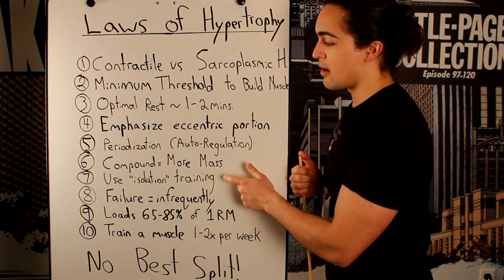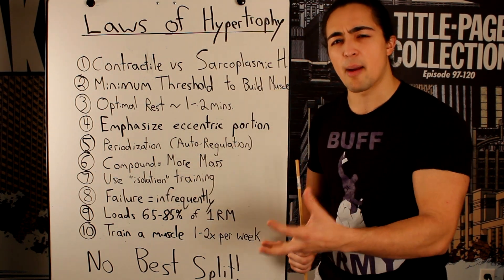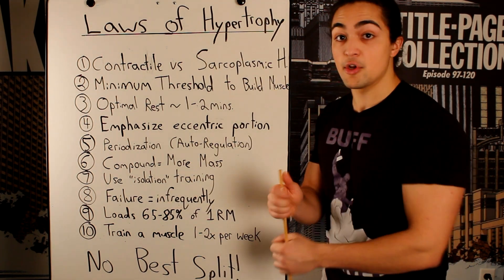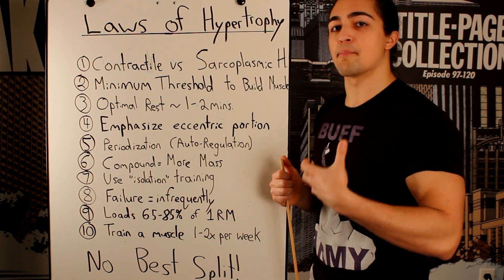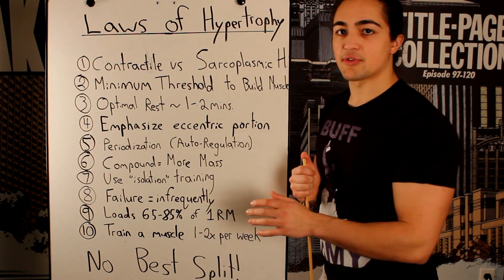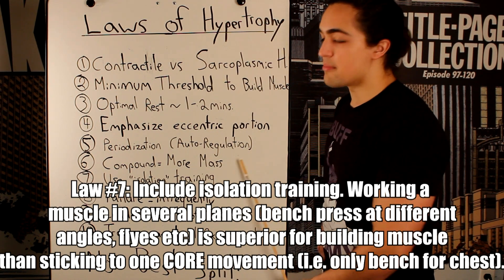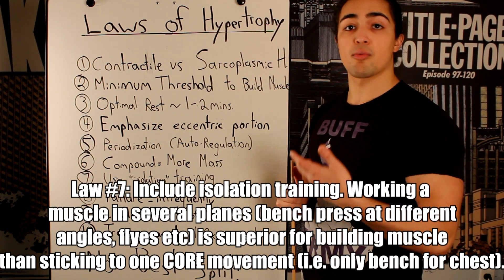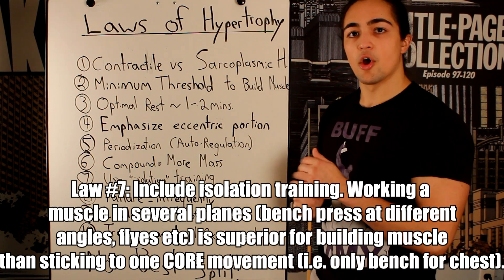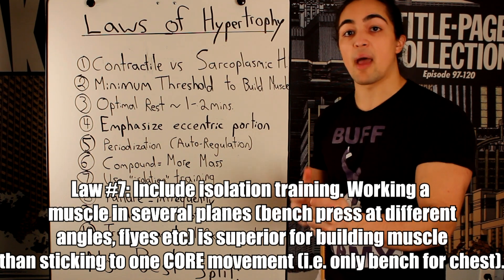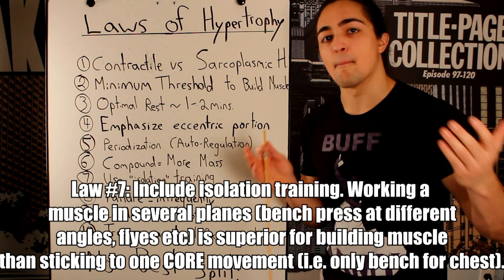Law seven: use isolation training. I put isolation in brackets because remember, you can't truly isolate one muscle — if you do a bicep curl, there's the inner and outer head of the bicep and brachialis, plus a lot of forearm muscles being worked. The reason to do isolation movements is that if you only do compound movements, you'll discover certain body parts grow fast and others lag. By doing isolation exercises that emphasize weak areas, you'll bring them up and develop a more balanced physique.